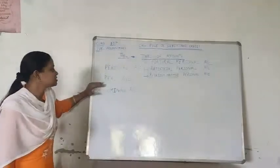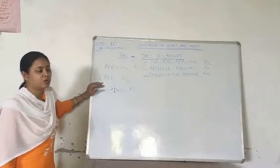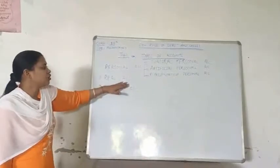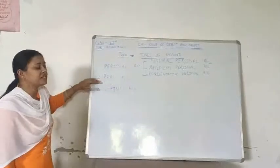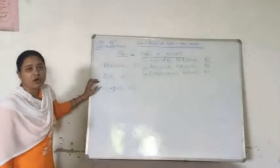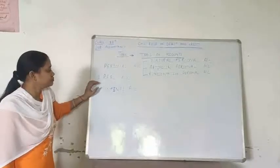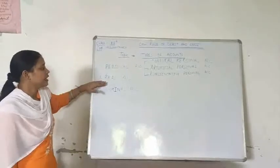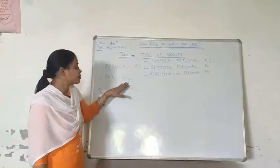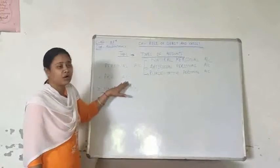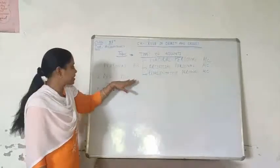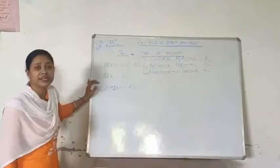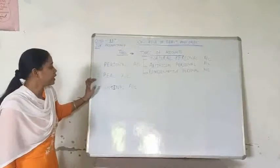The second account is real account. Real account is the account which is related to the assets of the firm — like machinery account, building account, cash account. This is called real account.